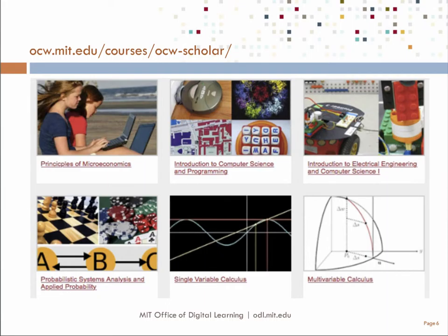OCW currently offers 12 Scholar courses, and those areas include biology, chemistry, computer science and electrical engineering, psychology, calculus, probability, linear algebra, and engineering dynamics and economics. We have one more in the works, which is in biological chemistry. Our Scholar courses are really among our most visited courses on the OCW site.